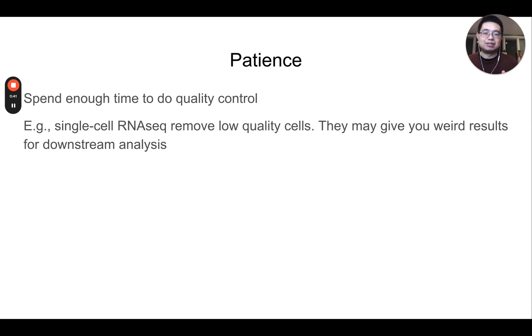First is patience. What do I mean by patience? You need to spend enough time to do quality control before you dive into the analysis. For example, for single cell RNA sequencing data, you want to spend enough time to remove those low quality cells because they may give you some weird results, like a cluster with actually low counts. Without doing enough quality control, it can give you trouble for downstream analysis.